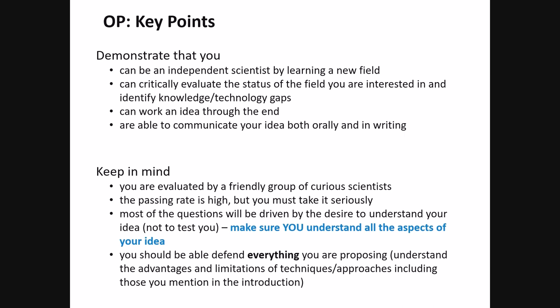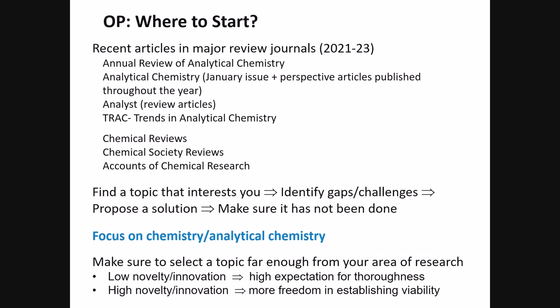Where to start: I would go to major review articles in recent journals. Annual Reviews of Analytical Chemistry and the very first issue of the year of Analytical Chemistry have concise reviews — that's a great starting point. Other good review journals exist, but if you go to Chem Reviews you'll have to read a very long review, so I'd recommend shorter reviews so you can evaluate different topics more quickly. Find a topic that interests you, identify gaps, propose a solution, and make sure this has not been done. Know how to articulate what has been done and what has not been done in the field.